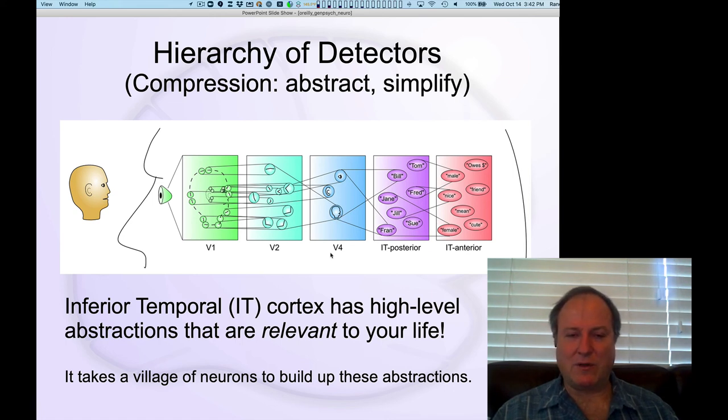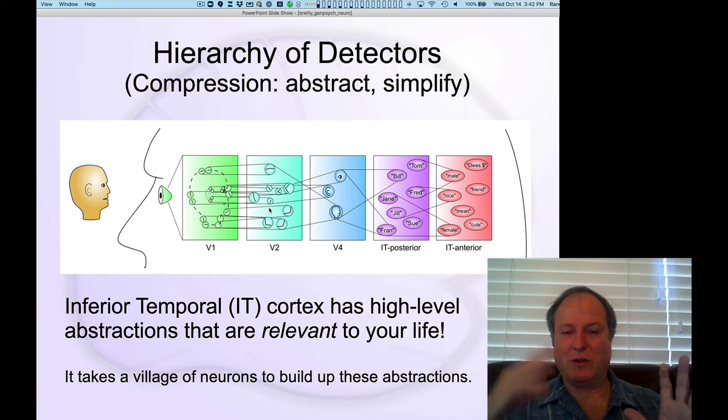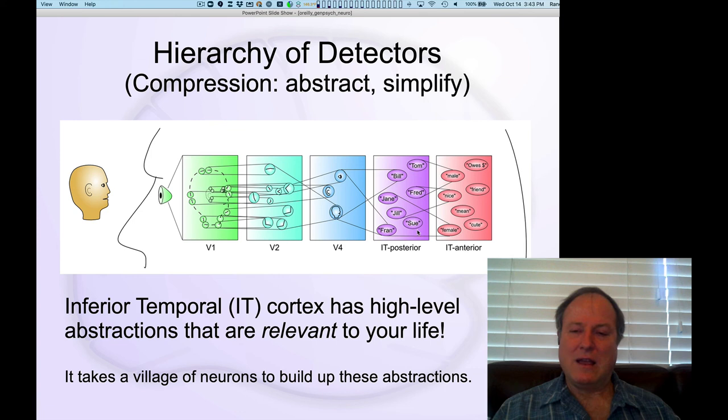V2 takes one further step and builds up more complex combinations of those features and so on and so on. So V4, the next level up, don't ask about V3 for the moment. It's there, but it's a slightly different area. So you get more complex combinations of those features. Again, just taking that same principle of detection and applying it over and over again as you go higher and higher up the hierarchy until, and this is the key point, at the highest levels, you have these detectors that encode really important behaviorally relevant information.